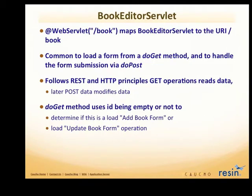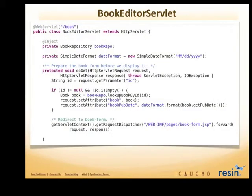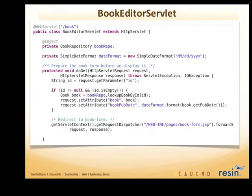So this is what the book editor servlet looks like for the load-the-form operation. When the user clicked on a particular book, they go to the do-get method — they get the ID parameter, which would not be empty. So then they use the book repository to look up that particular book. Then they map that book into request scope. This little piece of data formats the date for the HTML form in a US-style month/day/year format, formatting the publication date so the end user edits it in that particular format.